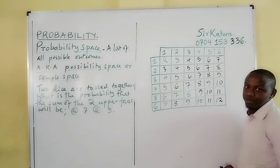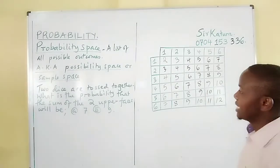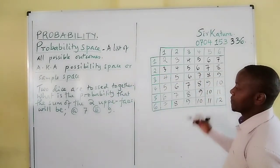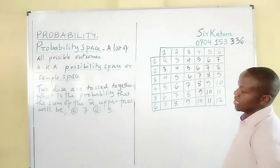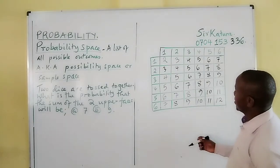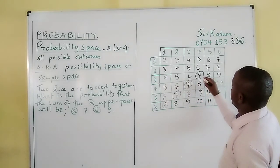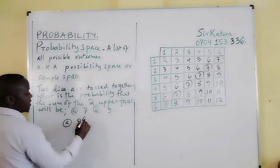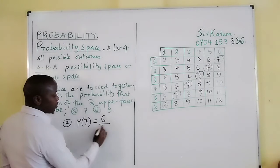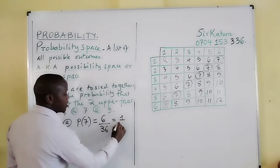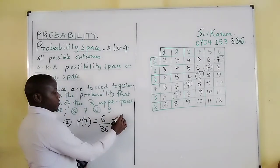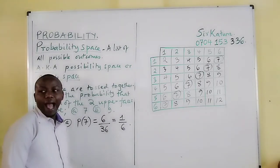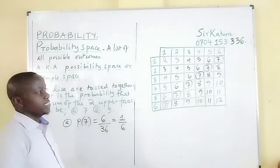These are the possible outcomes from the event whereby two dice have been thrown at once and the face values are added up. We want to find the probability that the sum of the faces will give us seven. Checking all areas where we have seven, we find six occurrences. So the probability of getting a seven is six out of thirty-six possible outcomes, which simplifies to one sixth.